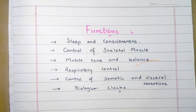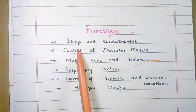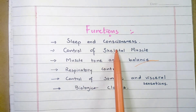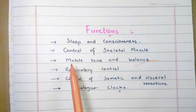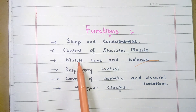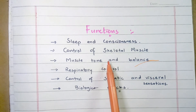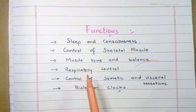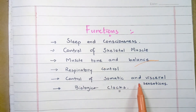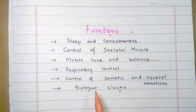Reticular formation plays an important role in the control of skeletal muscle activity. The control of sleep and consciousness is also associated with the reticular formation. It also has a role in the control of muscle tone and balance of the body, control of respiratory muscles, somatic and visceral sensations, and influence on biological clocks.